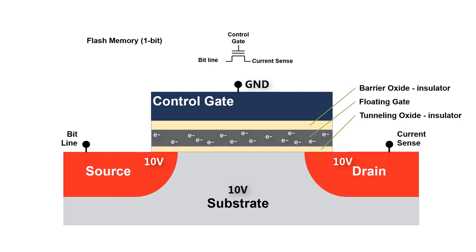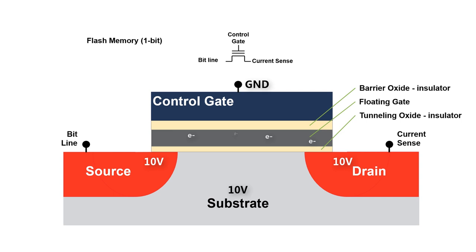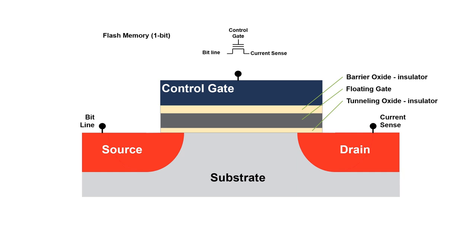Note that the gate is not turned on — there are no electrons moving from source to drain. We are simply putting a large field between the control gate and the substrate. The electric field is pushing the electrons away from the gate and pulling them down to the substrate. In our 10-volt field, these electrons gain enough kinetic energy to tunnel through this thin oxide and escape into the substrate.